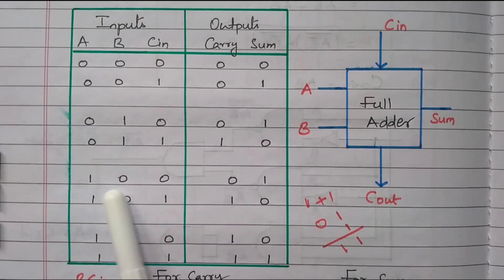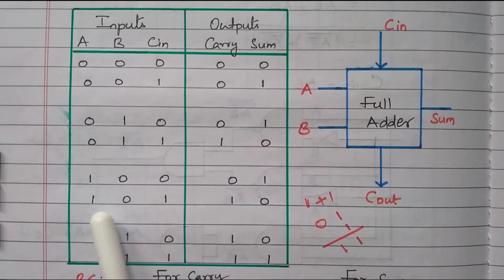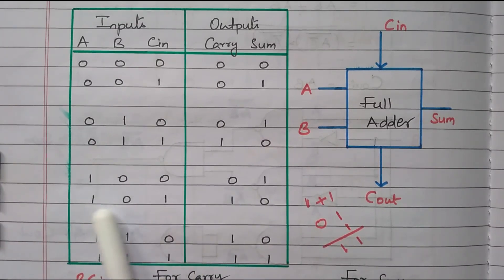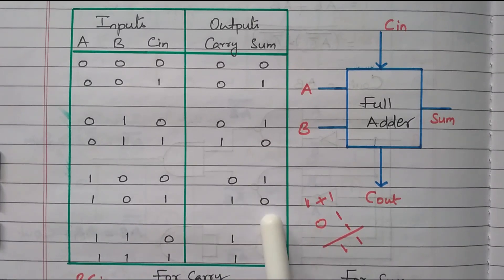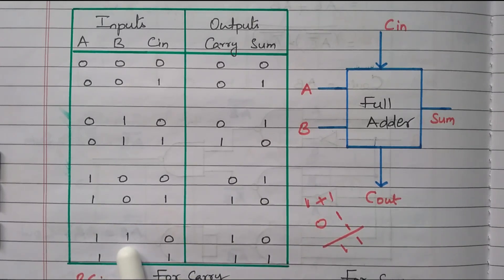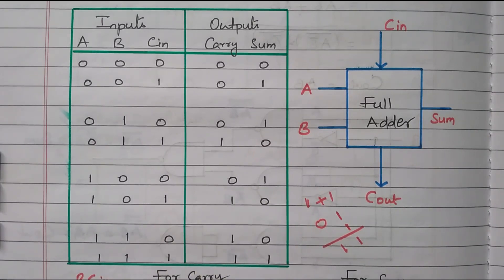When A=1, B=0, Cin=0 — sum is 1 and carry is 0. When A=1, B=0, Cin=1 — two 1s are available, so carry is 1 and sum is 0. When A=1, B=1, Cin=0 — again two 1s, so carry is 1 and sum is 0.